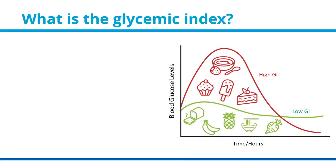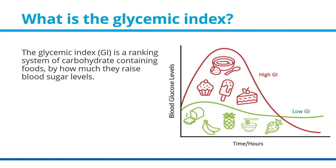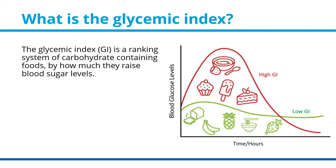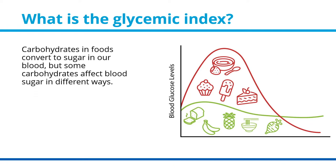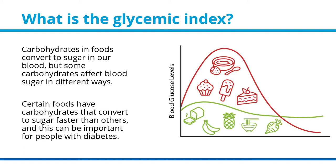What is the glycemic index? The glycemic index, or GI, is a ranking system of carbohydrate-containing foods by how much they raise blood sugar levels. Carbohydrates in foods convert to sugar in our blood, but some carbohydrates affect blood sugar in different ways. Certain foods have carbohydrates that convert to sugar faster than others, and this can be important for people with diabetes.